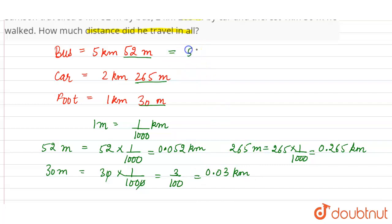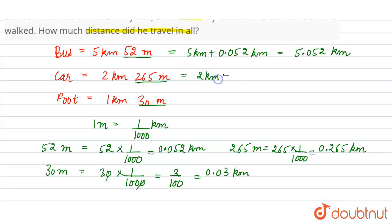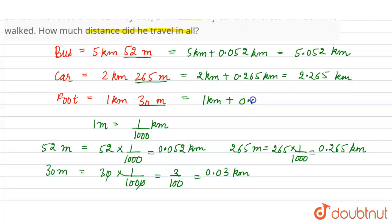So by bus: 5 kilometer plus 0.052 kilometer is equal to 5.052 kilometers. By car: 2 kilometer plus 0.265 kilometer is equal to 2.265 kilometers. By foot: 1 kilometer plus 0.03 kilometer is equal to 1.03 kilometers. Now we have to find the total distance.